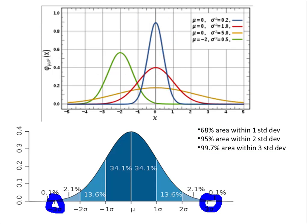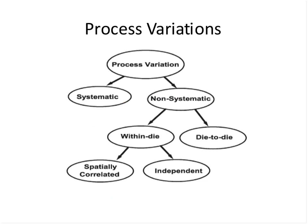Let us talk about process variations — how many types there are and how we model them. Process variations are of two types: systematic and non-systematic. Systematic variations are problems in the fabrication process that are not acceptable, such as oxide thickness being below a critical limit or channel length being beyond a permissible value. Systematic process variations are not handled in STA; they are handled in the fabrication process itself and should be corrected there. Non-systematic variations are the ones which SSTA or STA tends to model.